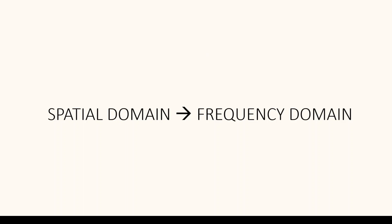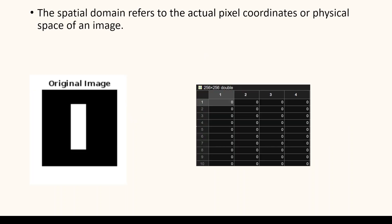Hello everyone. Today I will explain how an image in the spatial domain is represented in the frequency domain. An image is initially represented in the spatial domain where it is composed of discrete pixels with specific intensity values. This diagram gives the original representation of the image, showing it as a grid of discrete pixels where each pixel has a specific intensity value corresponding to its location.